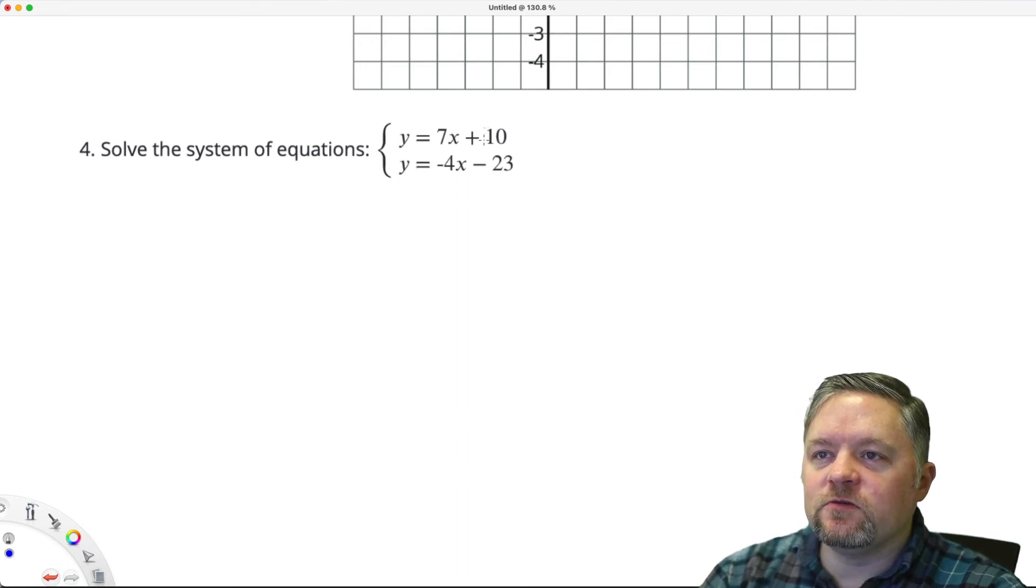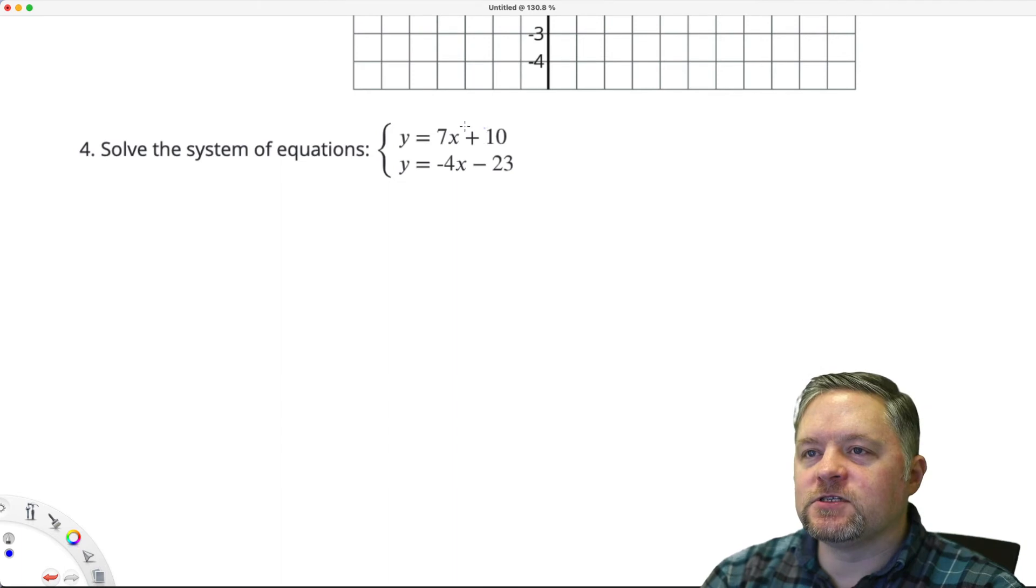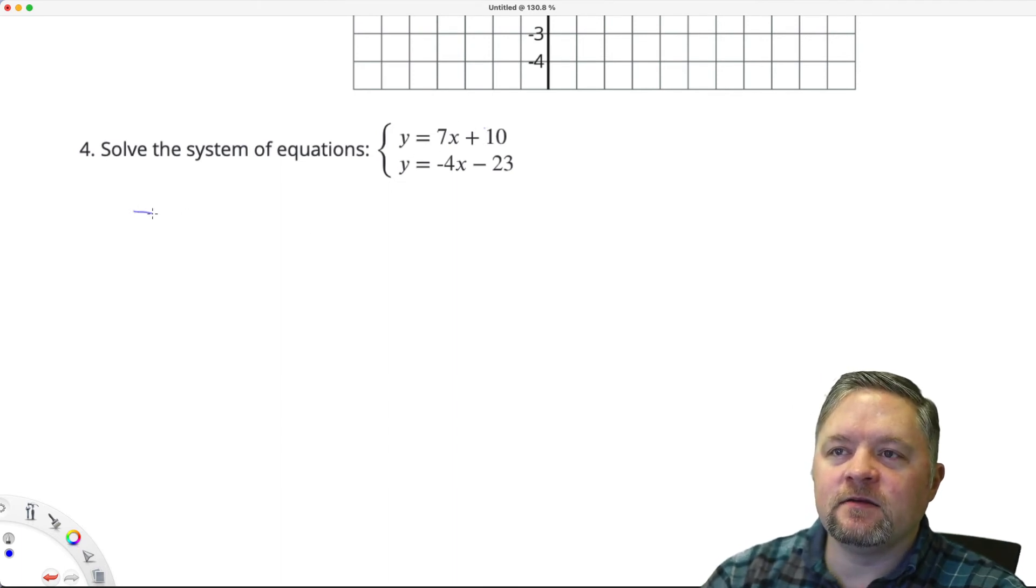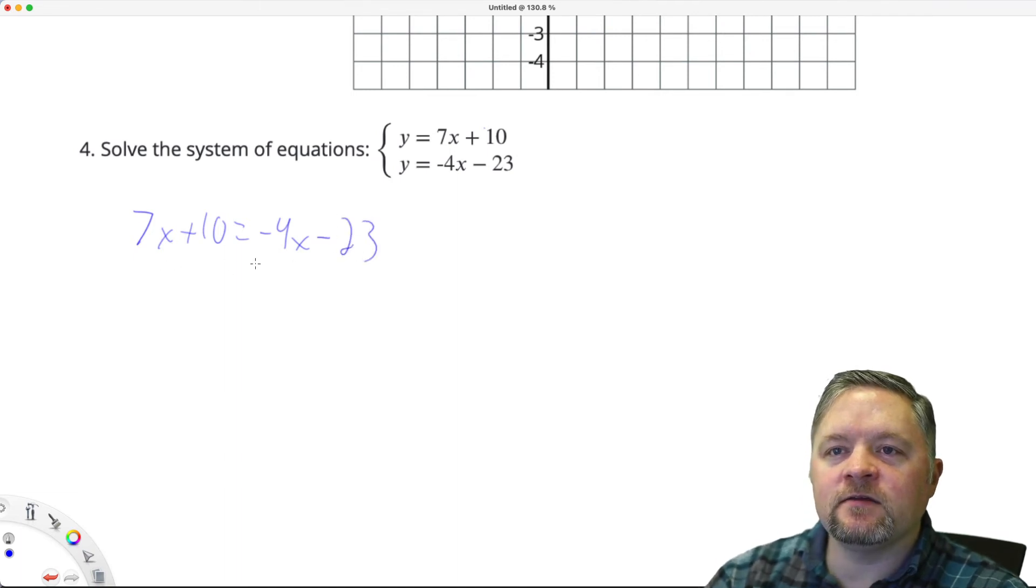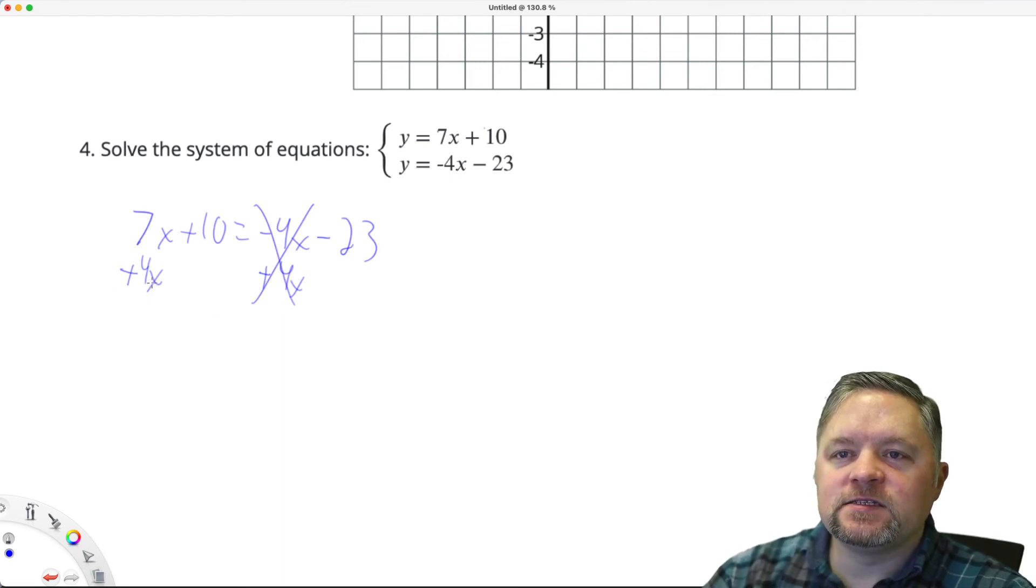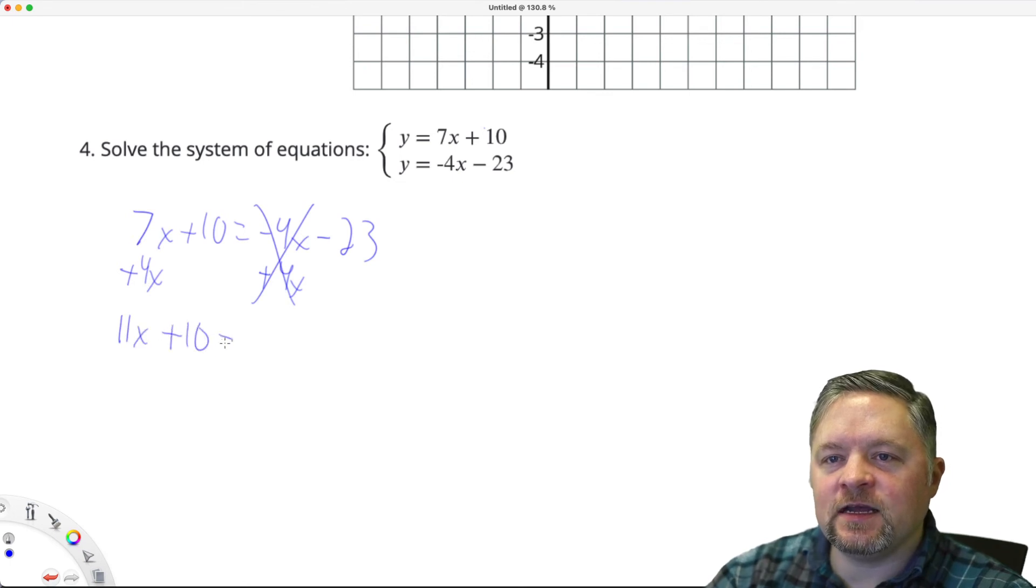Substitute if Y equals this stuff. We can plug this stuff into that Y. 7X plus 10 equals negative 4X subtract 23. Add 4X to each side. Because we want to get all the X's on the same side. 7X plus 4X is 11X plus 10 equals negative 23.